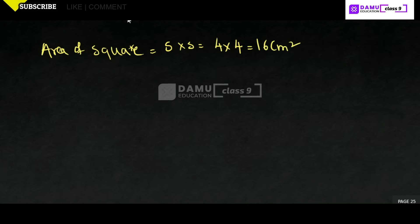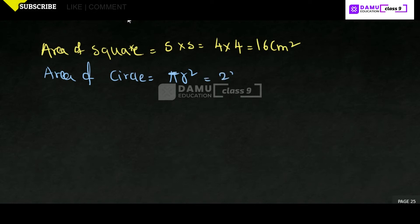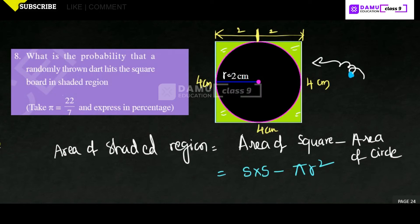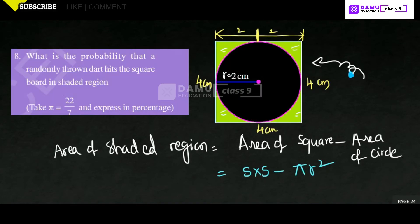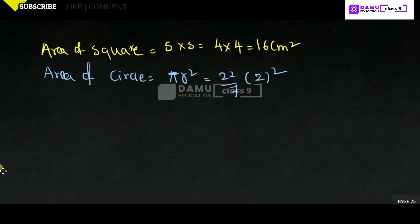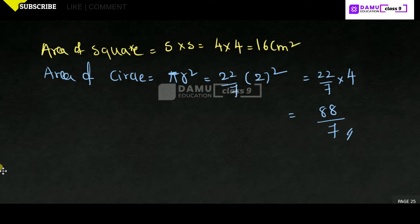Then, what is the area of circle? Area of circle will be equal to pi r squared. Pi will be equal to 22 by 7 as the question states. Radius r will be 2, so r squared is 4. That gives us 22 by 7 into 4, which equals 88 by 7.